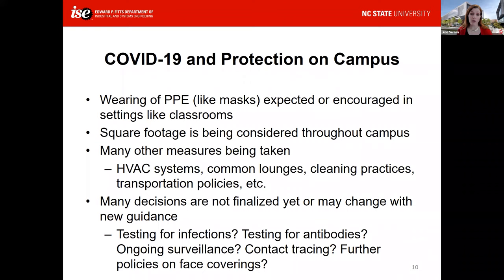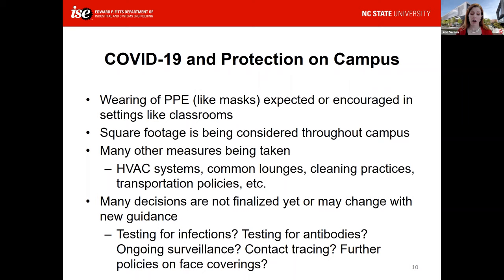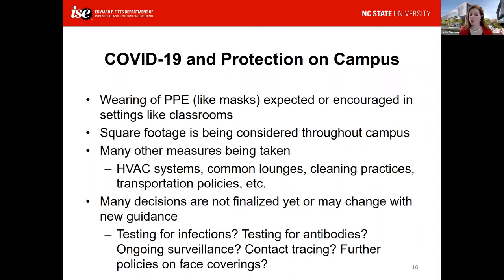There are many decisions that are not finalized yet or may continue to change as new guidance rolls out. For example, we don't know what the campus policy will be around testing for infective cases or testing for antibodies, or whether there will be ongoing disease surveillance with contact tracing on closest companions. We don't know what further guidance on face coverings will look like. We will continue to see things rolled out between now and August 10th.